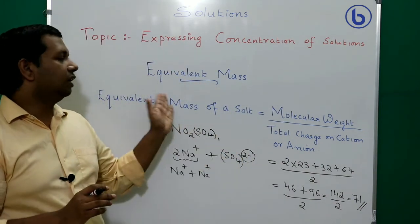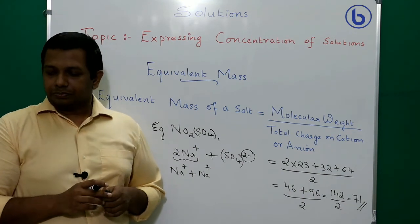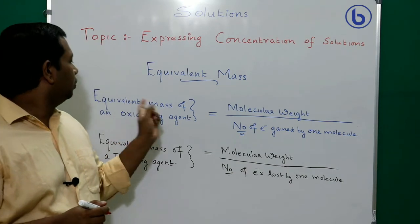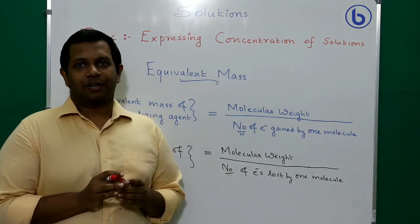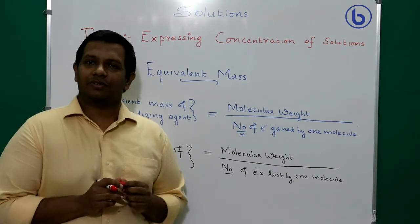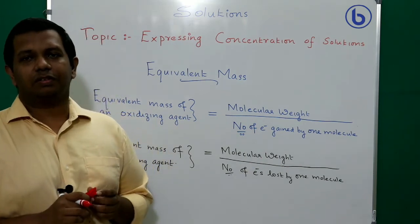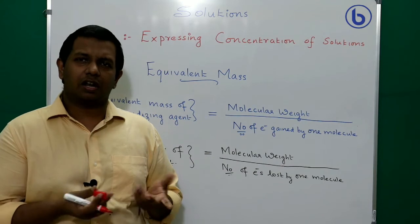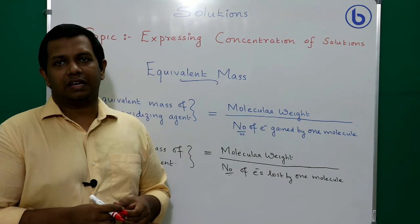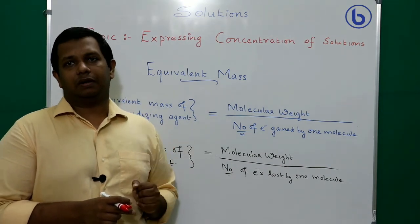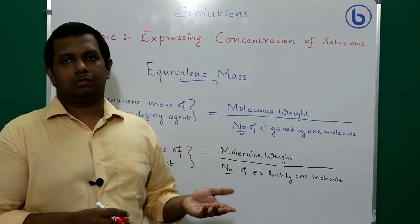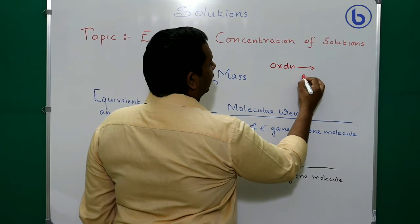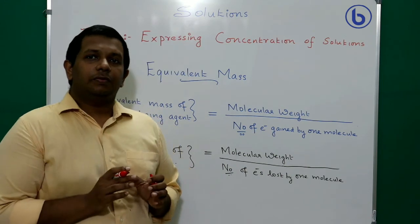Next, we will understand the equivalent mass of an oxidizing or reducing agent. To understand this, we first need to understand oxidation and reduction. Oxidation is a phenomenon whereby oxygen is introduced to a compound, or in terms of oxidation state, electrons are lost during oxidation.